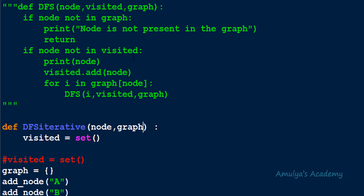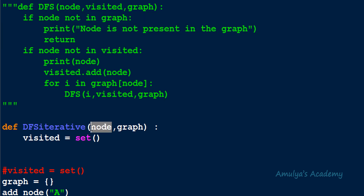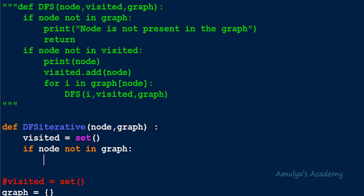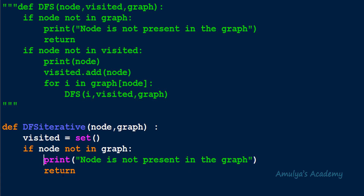We also need to pass the graph as a parameter. If you define the visited set outside the function, you'll need to pass it as a parameter too. Next, like in the recursive approach, we first check whether the starting node is present in the graph. If it's not present, we can't start traversal, so we check: if node not in graph, print a message that the node is not present, and return out of the function.